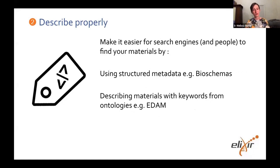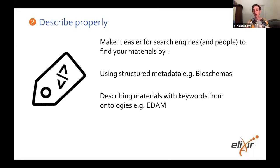The second step on the road to fairness is to describe the training materials properly. For this particular step, we were thinking more about structuring the metadata rather than what goes into the metadata — really to make it easier for search engines to find and index the content of your materials. One way you can do this is to use Bioschemas, which have specifications with certain categories associated with training materials. You can also use keywords from an ontology to describe your materials more consistently, so that within your field, someone training in Australia and someone training in the UK are describing materials on the same topic with the same words. Within the bioinformatics community, quite a lot of people are using terms from the EDAM ontology, which you can look up on the OLS Ontology Lookup Service.